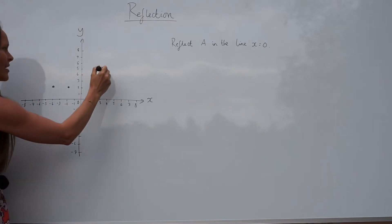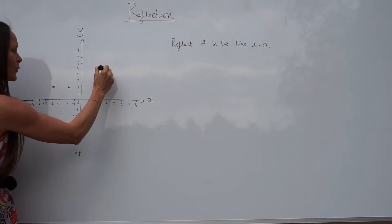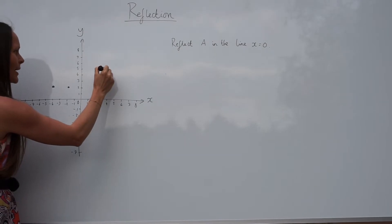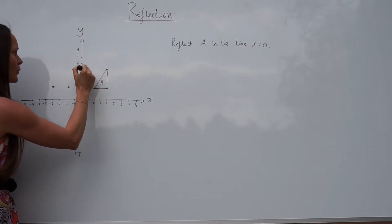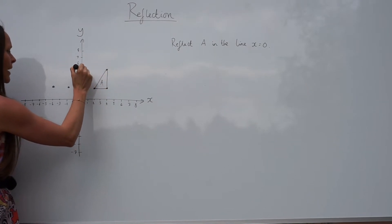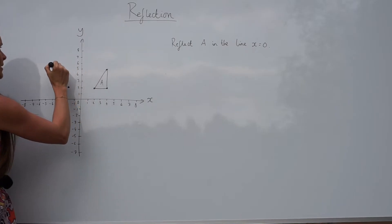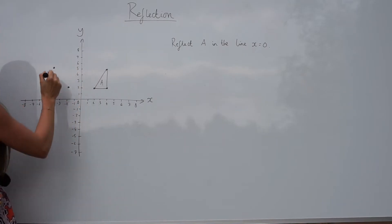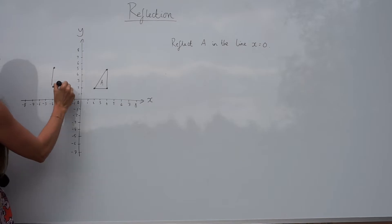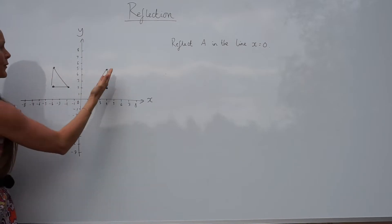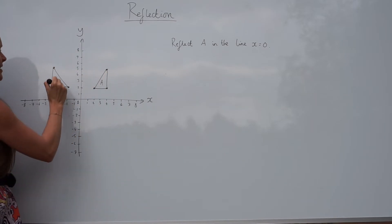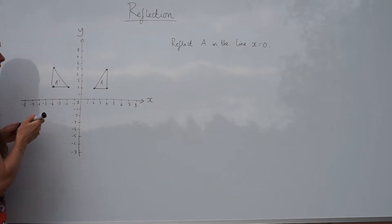The point up here is also four units away from the mirror line — one, two, three, four — so you count four units again. And you can see now it's the same triangle, the same size, but it's flipped in the mirror line. That is the image of A, the reflected shape.